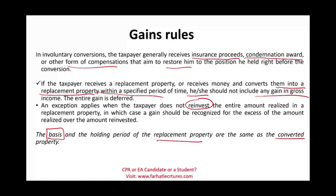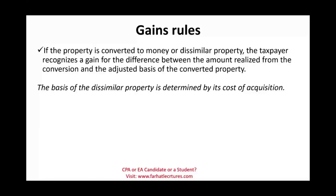If the property is converted to money and you are not going to do anything with it — for example, your boat was destroyed and you did not replace it — or you replace it with dissimilar property, the taxpayer would recognize a gain from the amount realized and the adjusted basis. It's as if it was sold. If you wanted to reinvest the money in similar property to put you back in the original position, the government says they're willing to give you a break. Otherwise, if you keep the money, it's as if you sold it. The basis of the dissimilar property is determined by the cost of acquisition.